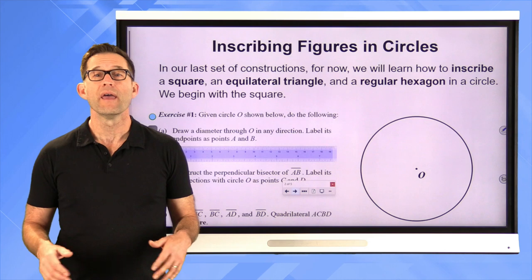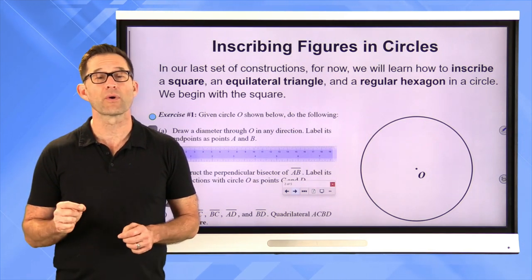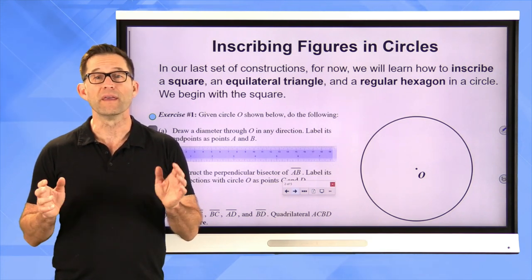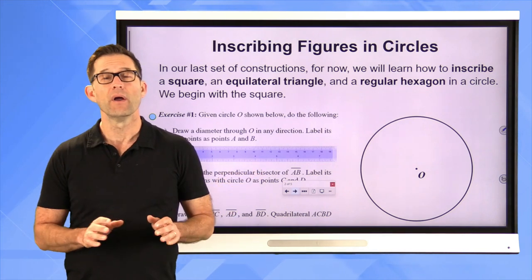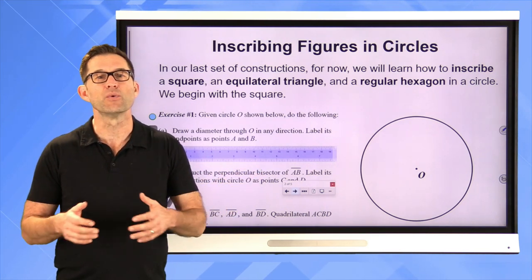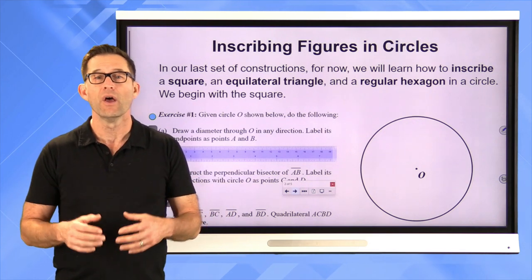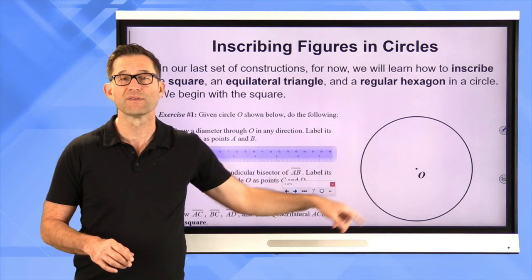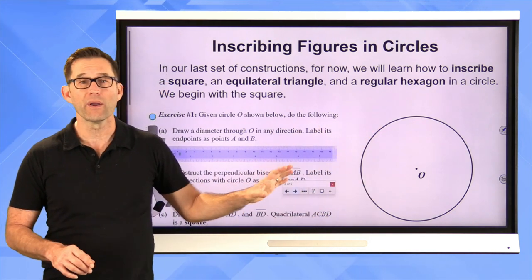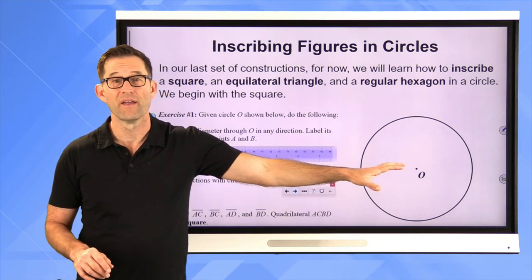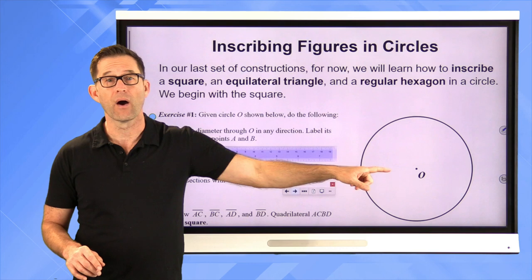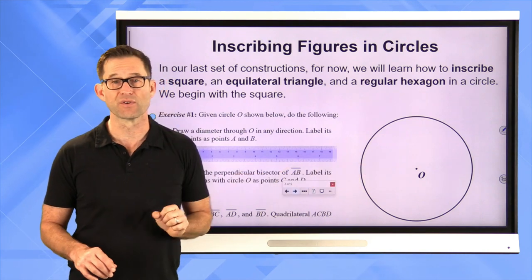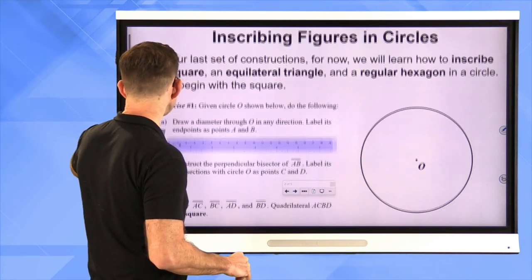In our last set of constructions, we will learn how to inscribe a square, an equilateral triangle, and a regular hexagon in a circle. We begin with the square. To inscribe a figure in a circle basically means that all of its vertices will be touching the circle. Starting with a circle that has its center marked, we'll put a perfect square in so that its four vertices touch the circle. Let's see how to do that in exercise number one.